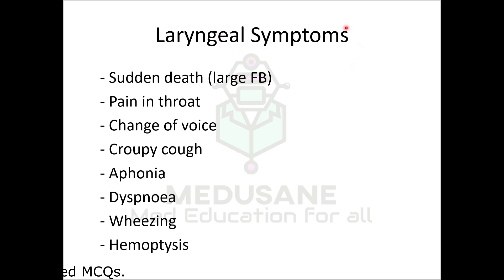In the initial period there is choking, gagging, and wheezing due to laryngospasm. Either the foreign body is coughed out, or if small, it lodges further down. The respiratory mucosa then adapts in the symptomless period. If the foreign body is in the larynx, a large one causes acute respiratory obstruction — the child cannot breathe and may die unless immediate measures are taken. Symptoms also include throat pain, change in voice, croupy cough, aphonia, dyspnea, wheezing, and hemoptysis if a sharp foreign body causes local damage.